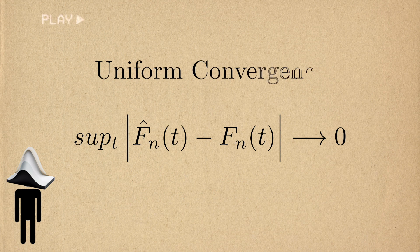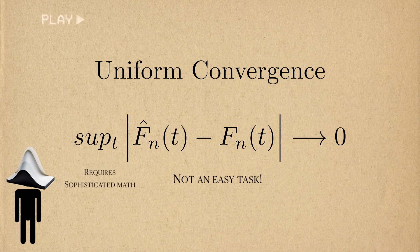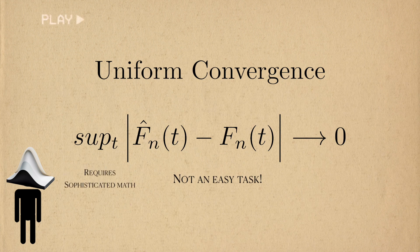And uniform convergence is no joke to prove. Dealing with the behavior of suprema is much more difficult than a sample mean or the variance. But before we can even start, we have to address two obstacles in our way.